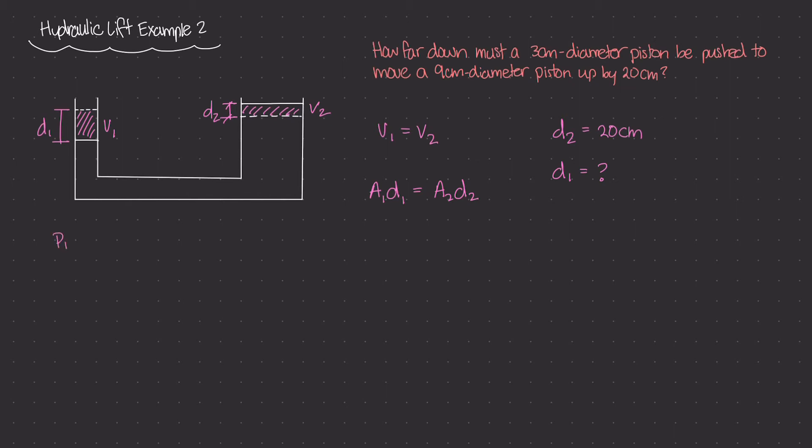So for piston one, d1 is our unknown and our area is going to be π r². So π times the radius. Now the diameter of piston one is given in the question, it's 3 cm, so the radius is going to be 3 cm divided by 2. Diameter divided by 2 gives us radius, so 3 cm divided by 2, that's the radius, and we need to square the radius.